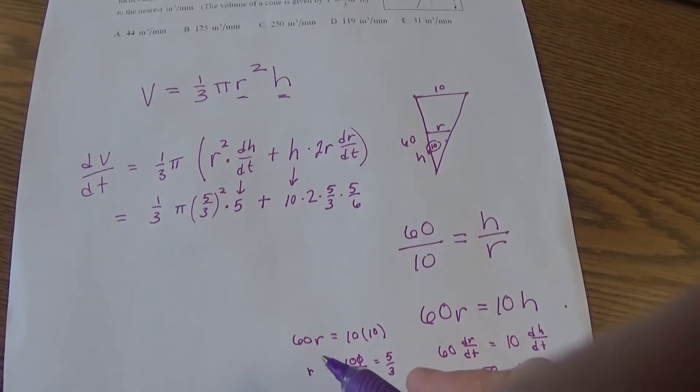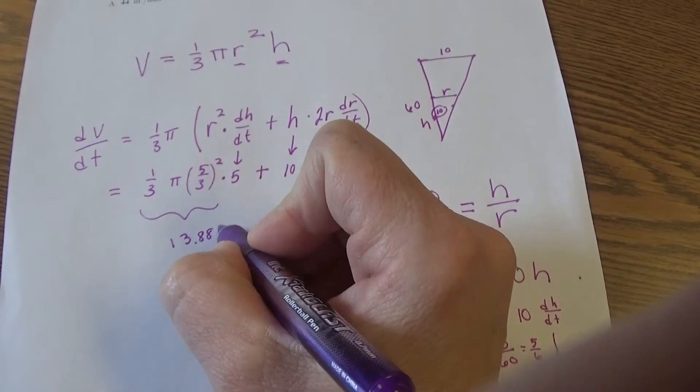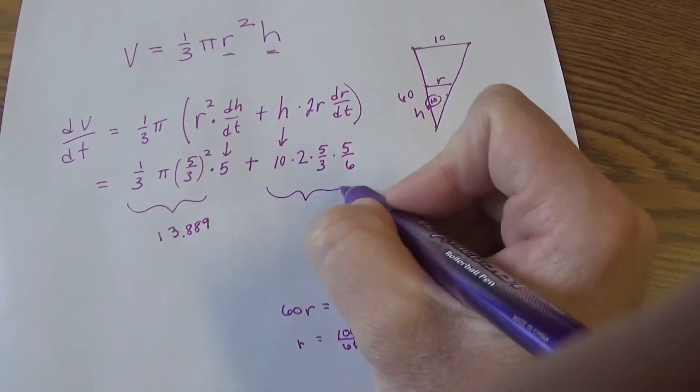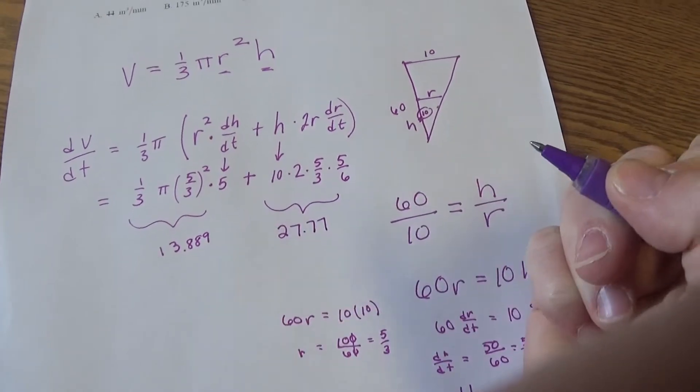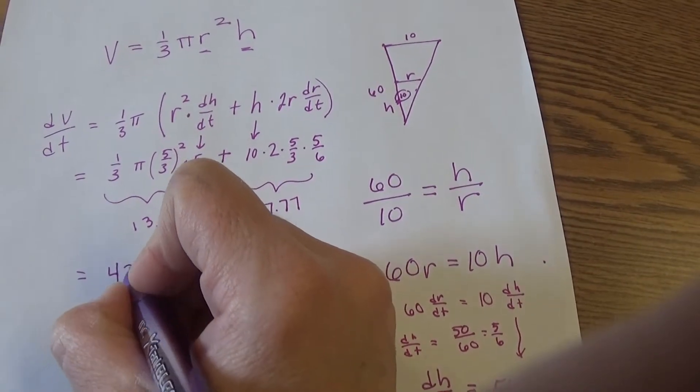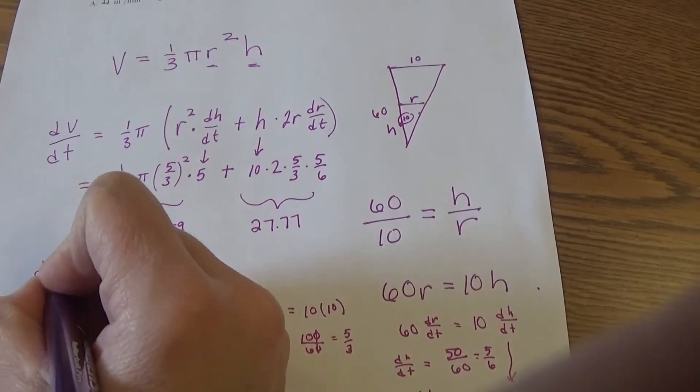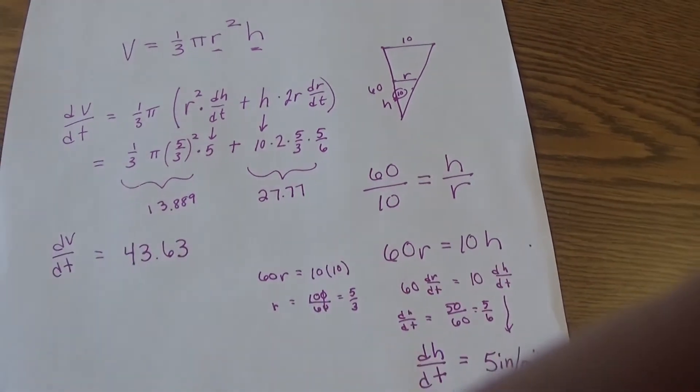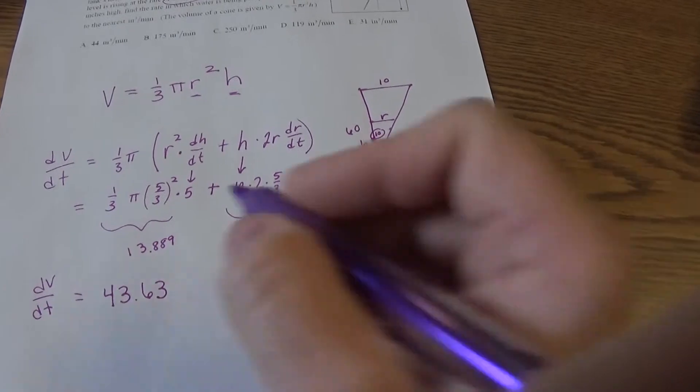So I've got 10 times 2 times 5/3 times 5/6 for the second chunk here. We figured out r was 5/3, so I'll have 5/3 squared times 5. One-third pi here. When I did that earlier, I got here to be 13.889, I got here to be 27.89, so I get 43.63. That's a volume dV/dt—that's what's actually happening to the volume of the water in the tank right now, in cubic inches per minute.